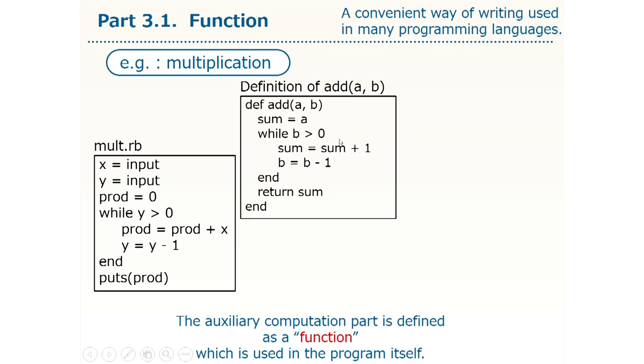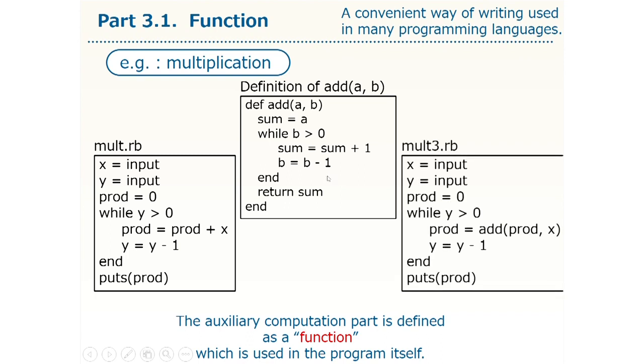Given a and b, the function computes a plus b. This program can be rewritten using this function. Specifically speaking, this blue part, this blue area where we were just doing addition, can be rewritten in one line like this. This statement orders the computers to compute prod plus x using the function add and store it to prod.